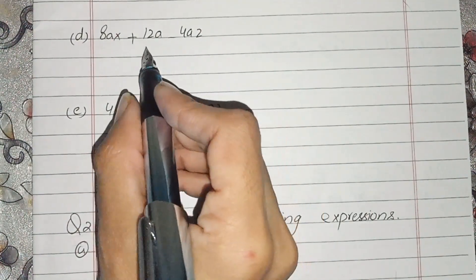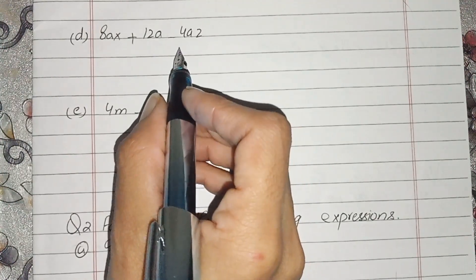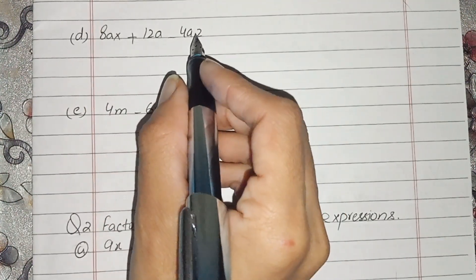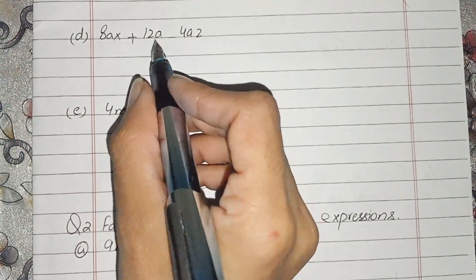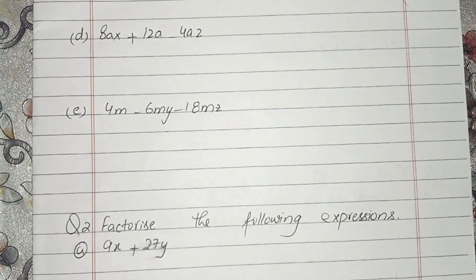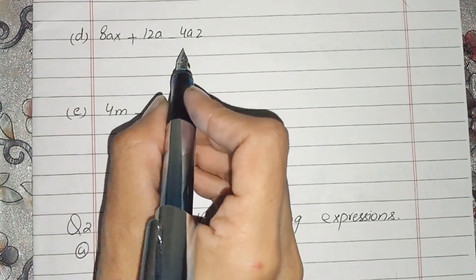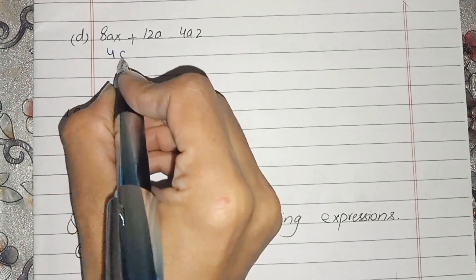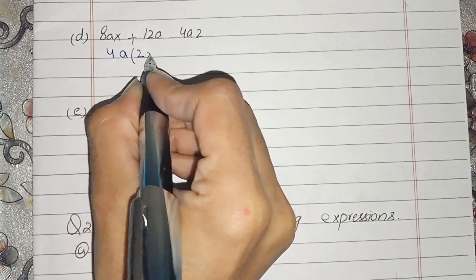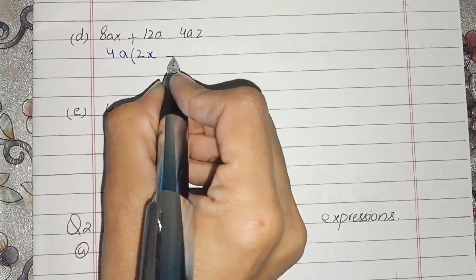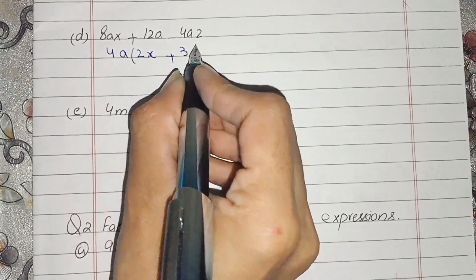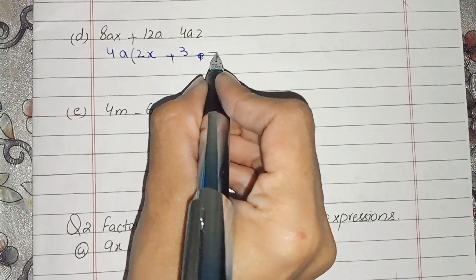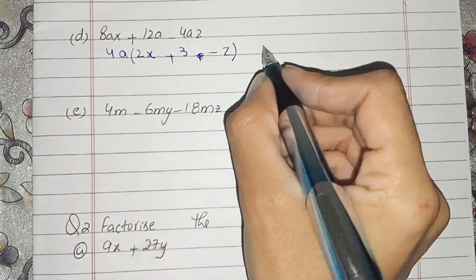Now students, d part. In d part, the common factor coming here is 4. Now there are 3 values here. We have to absorb all three and find out the common. Here we have 4 and 7a common, and left is 2x plus 3 and minus z.